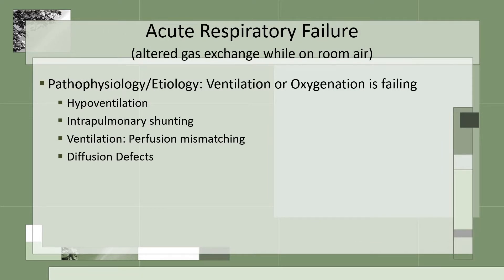We're going to start now with respiratory failure. The pathophysiology is that ventilation or oxygenation is failing. The etiology can be from many causes including hypoventilation, which is a decrease in alveolar ventilation. This could be caused by CNS depressants like narcotics or a traumatic brain injury, neuromuscular dysfunction like spinal cord injury, or musculoskeletal dysfunction like chest trauma. The next reason could be intrapulmonary shunting, where blood is returning to the left atrium without being oxygenated because areas of the lung are inadequately oxygenated — for example, atelectasis from pneumonia.